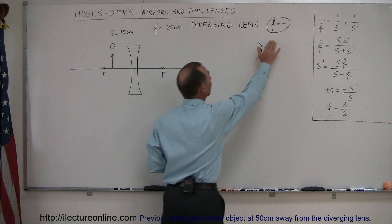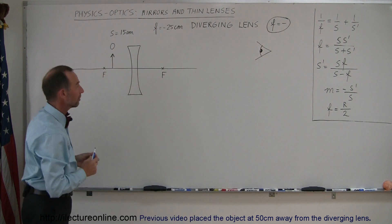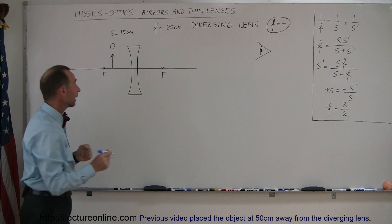Again, a diverging lens has a negative focal length, and in this case, the focal length is minus 25 centimeters. Alright, drawing the ray diagrams,